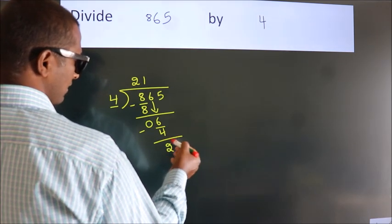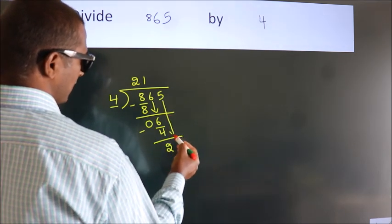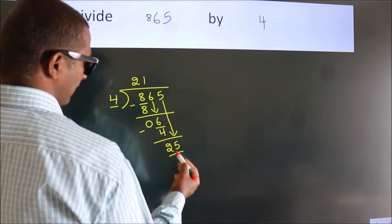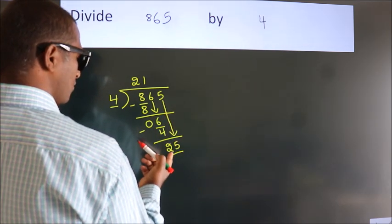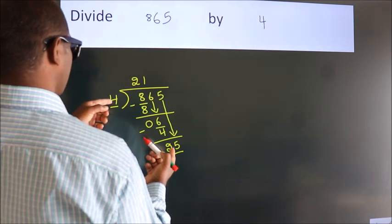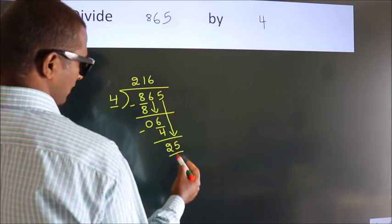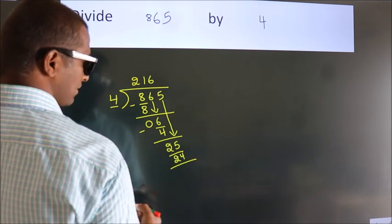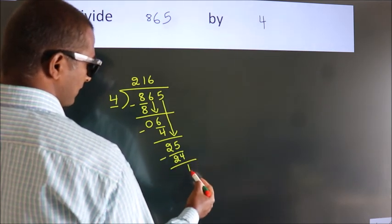After this, bring down the beside number. So 5 down. So 25. A number close to 25 in 4 table is 4 6 24. Now, we subtract. We get 1.